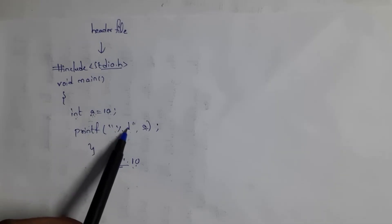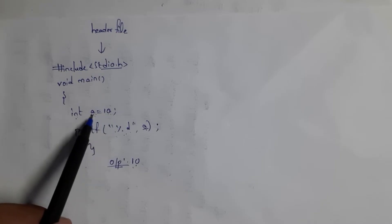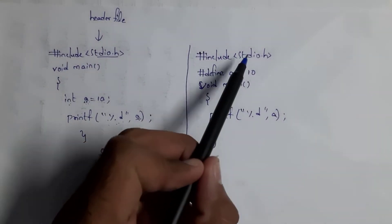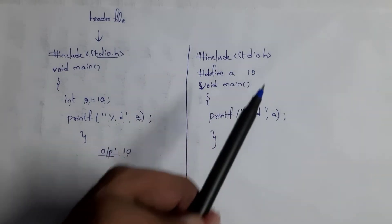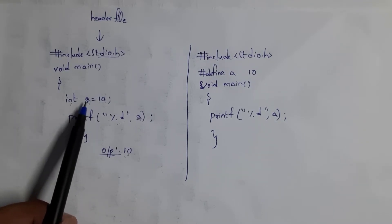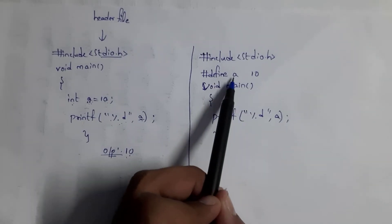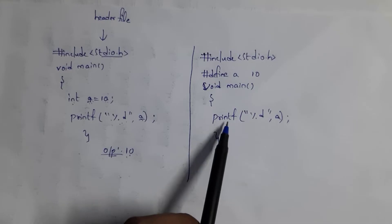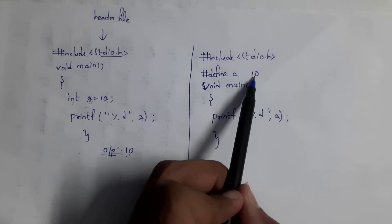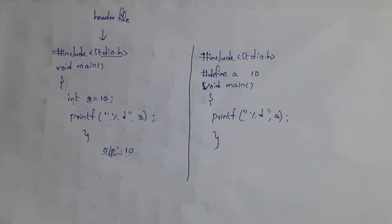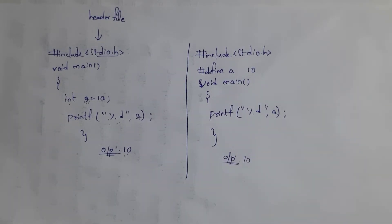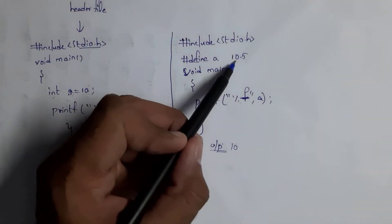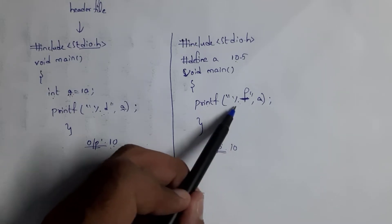The same program written using a macro looks like: #include stdio.h, then #define A 10. When we write int a = 10 we call 'a' a variable, but when we write #define A 10 we call 'A' a macro. Inside void main, we write printf("%d", A) and get output 10. There is no need to declare a data type. If you want a float value like 10.5, just write #define A 10.5 and change the format specifier to %f.